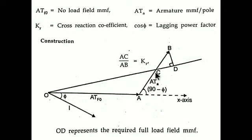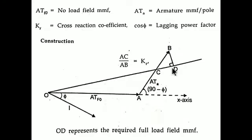After finding point C, draw the line O to C and extend it in the direction of C. Then, from point B, draw a line perpendicular to the extended OC line. This perpendicular line from B intersects the OC extension at point D. The length OD represents the full load field MMF. This completes the phasor diagram construction.